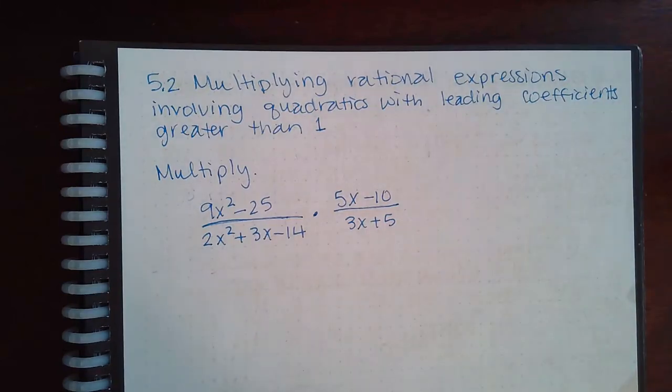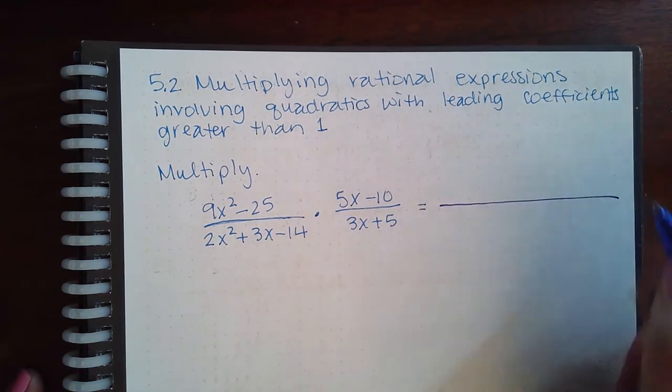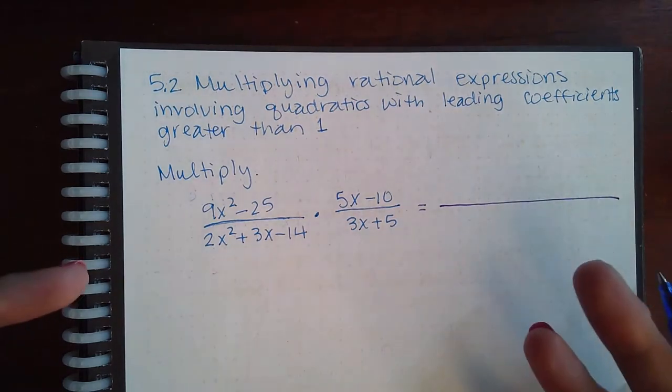Here we have 5.2 multiplying rational expressions involving quadratics with leading coefficients greater than 1. So there's nothing really different here other than the type of numerators and denominators, but the process is still the same.